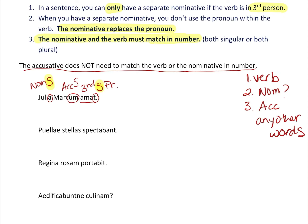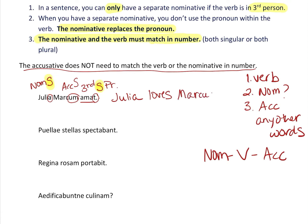The accusative does not need to match the verb or the nominative in number — she could love several Marcuses or just one Marcus. When we translate, we go in English word order: nominative, verb, accusative. The nominative is Julia; the verb is 'loves'; the accusative is Marcus. So: 'Julia loves Marcus.' We know for sure Julia loves Marcus — it might be unrequited, but she loves him.